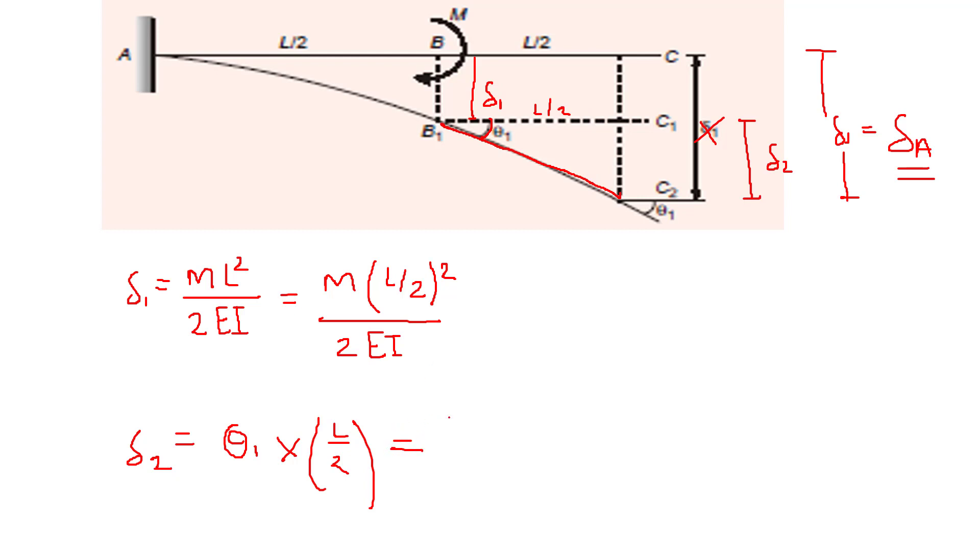So θ1 is what? θ1 is simply ML upon EI, where our L is L/2. In order to get this slope at this point, our formula is ML by EI. So this will become ML upon 2EI.